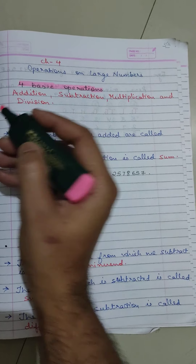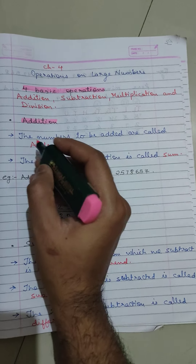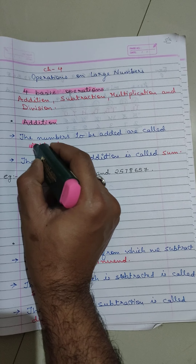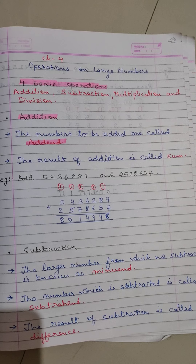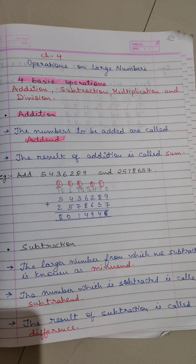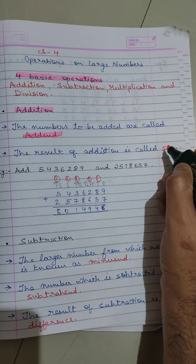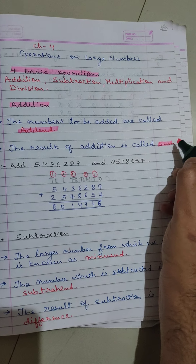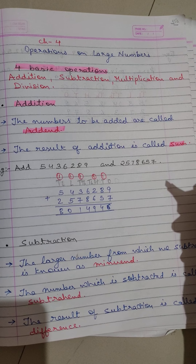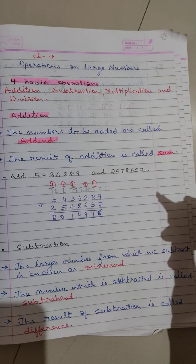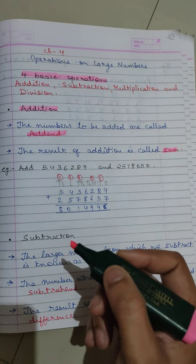The first key point is that the numbers to be added are called the addends. That means the two numbers, or more than two numbers, which we are going to add are known as addends. The second key point is that the result of addition is called the sum — that is, the answer after adding two or more numbers is known as the sum.